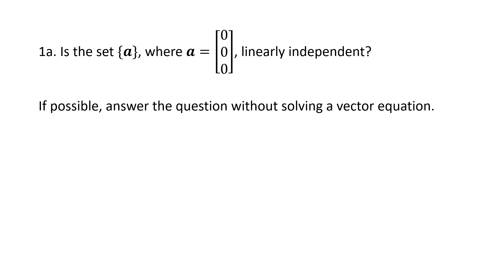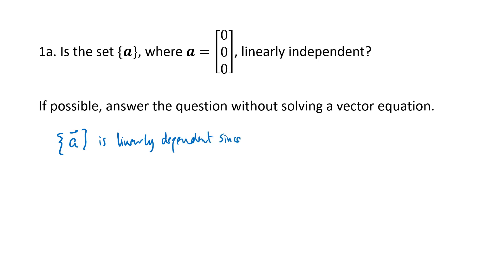For the first problem we have a set containing a single vector, and that vector is the zero vector [0, 0, 0], and we want to know if that set is linearly independent. One of the things we discussed is that a set of a single vector is linearly independent exactly when that vector is not the zero vector. So this set is linearly dependent since the vector is the zero vector.